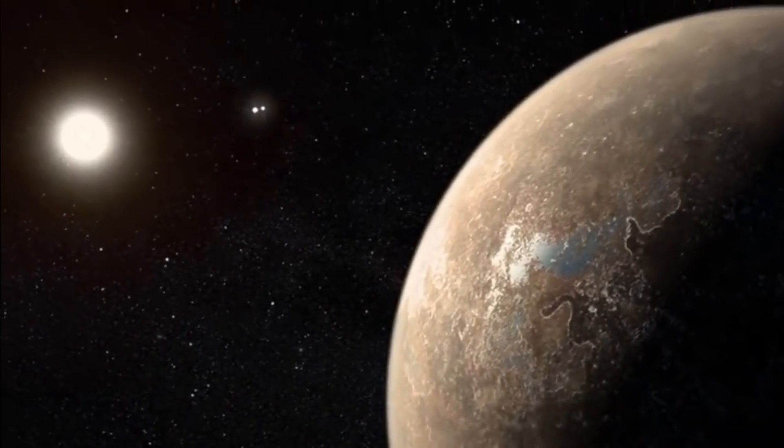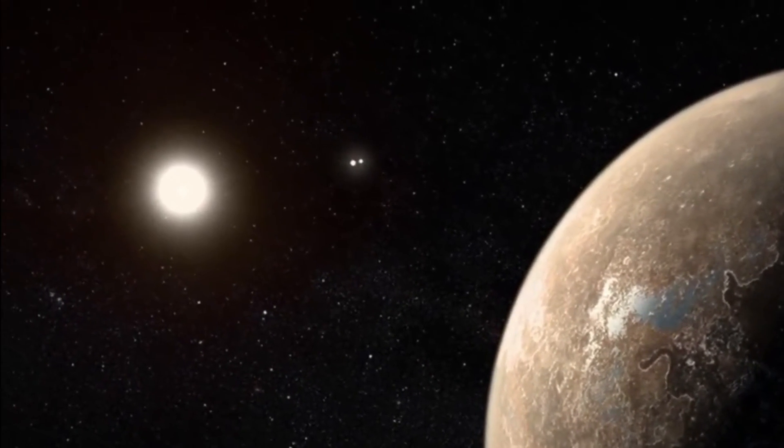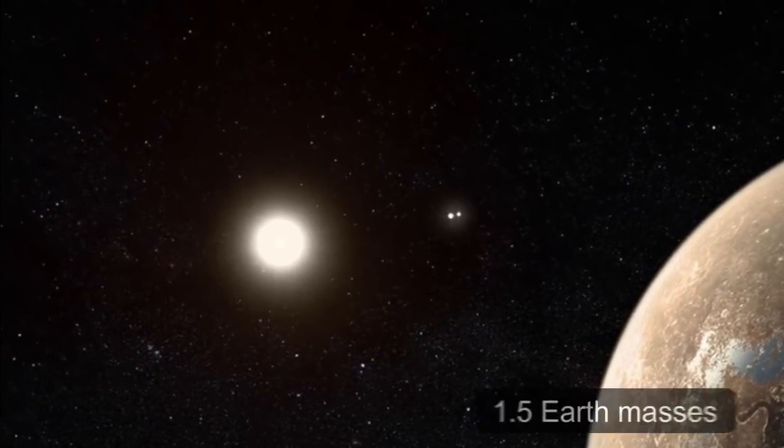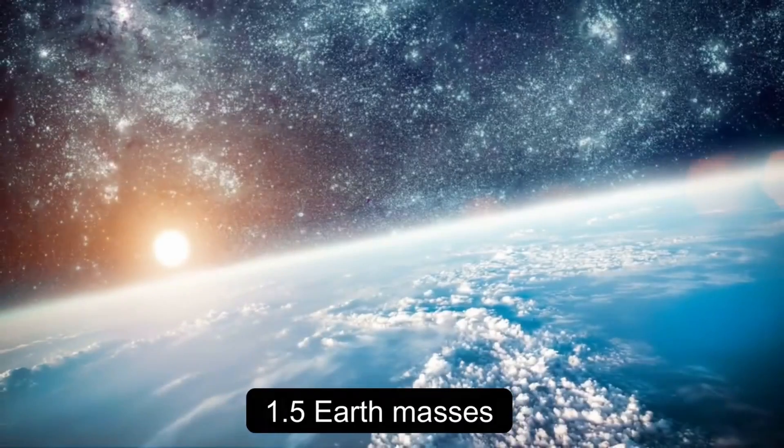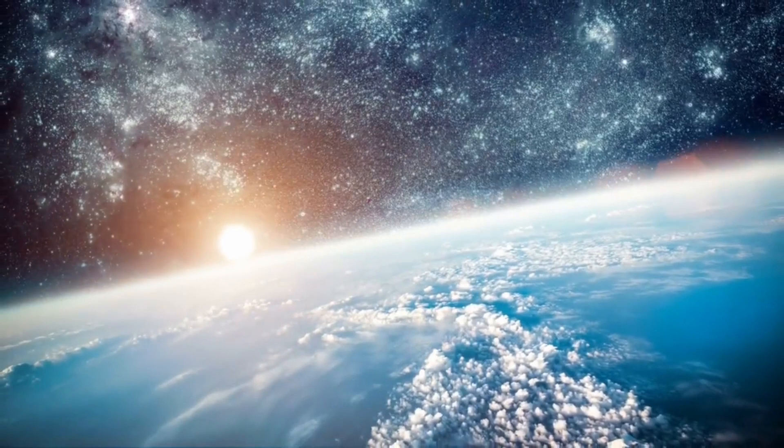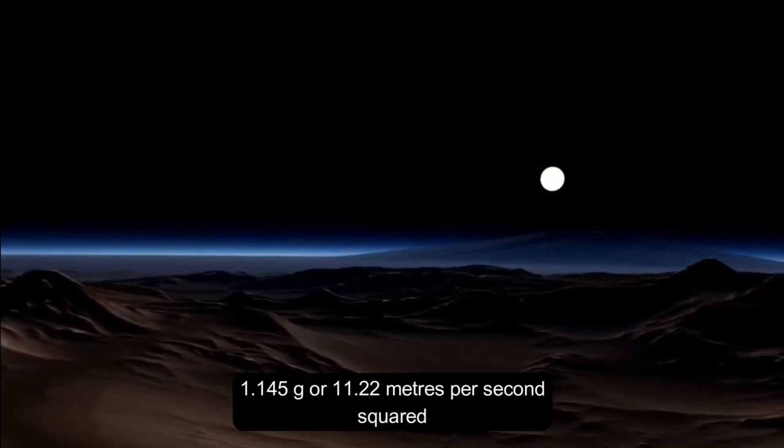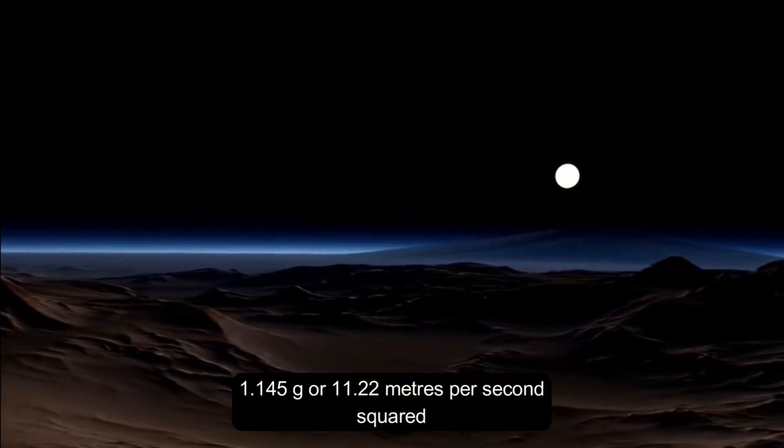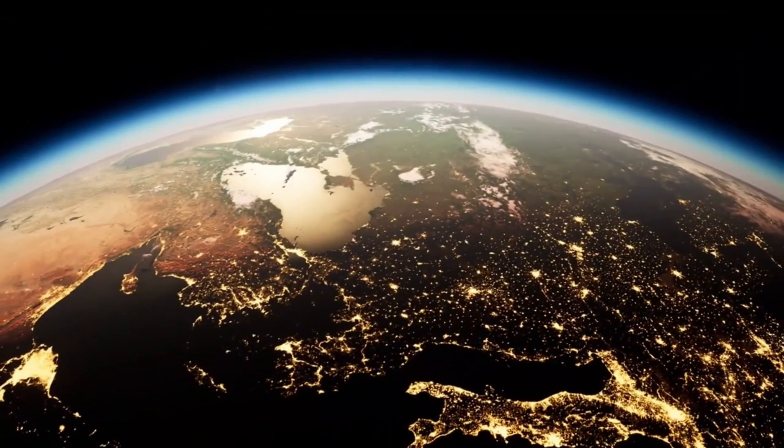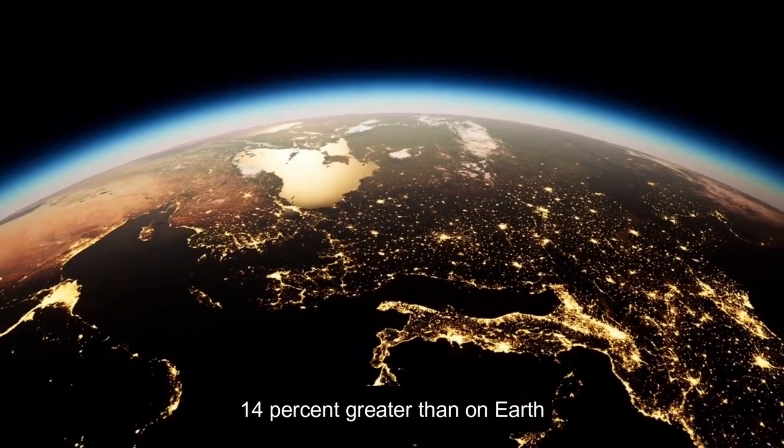Proxima b, like Earth, yields gravity. If Proxima b is spherical with a mass of 1.5 Earth masses and the same mass density as Earth, its surface gravity would be around 1.145 g or 11.22 meters per second squared, which is about 14% greater than on Earth.